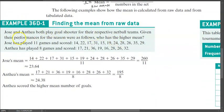We've got Jose and Anthea both play goal shooter for their respective netball teams. Given their performances for the season were as follows, who has the highest mean? Now, before we get to that, we can see that Jose played 11 games and Anthea played eight games. So it's safe to say that maybe this is a little bit biased because Jose has played more games, but let's just take it for face value. We have all these numbers here who performed better.